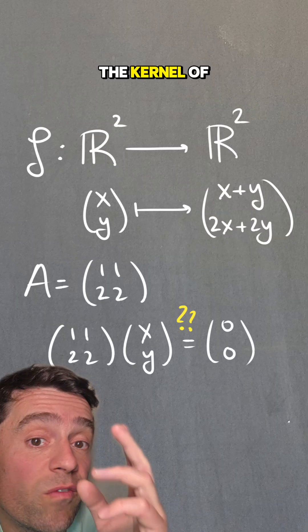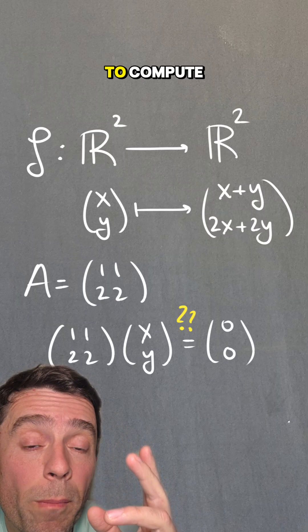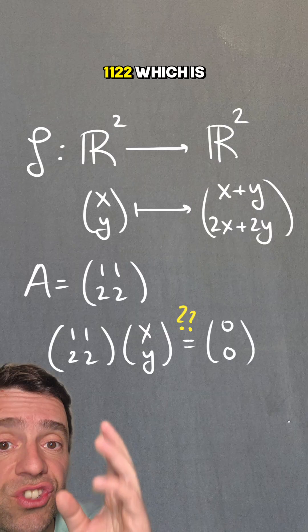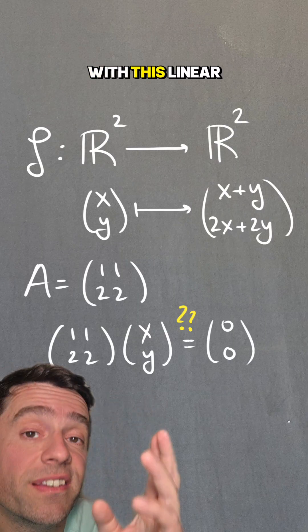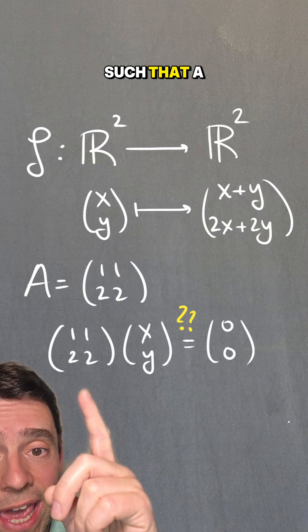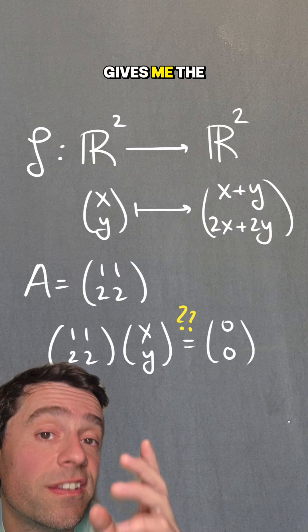So to compute the kernel of my function f, I have to compute the null space of my matrix [[1,1],[2,2]], which is the one associated with this linear map. So I'm looking for those vectors (x,y) such that A times (x,y) gives me the 0 vector.